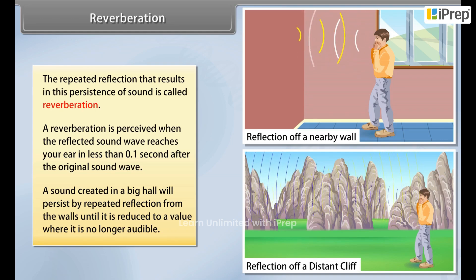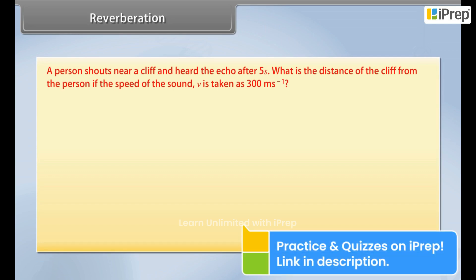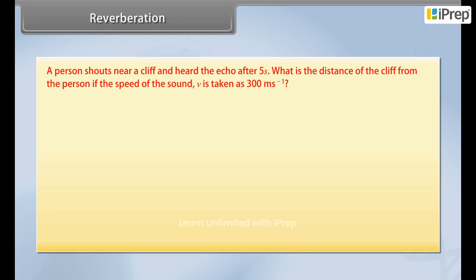Let's now solve a problem. A person shouts near a cliff and hears the echo after 5 seconds. What is the distance of the cliff from the person if the speed of the sound V is taken as 300 meter second raised to the power minus 1?